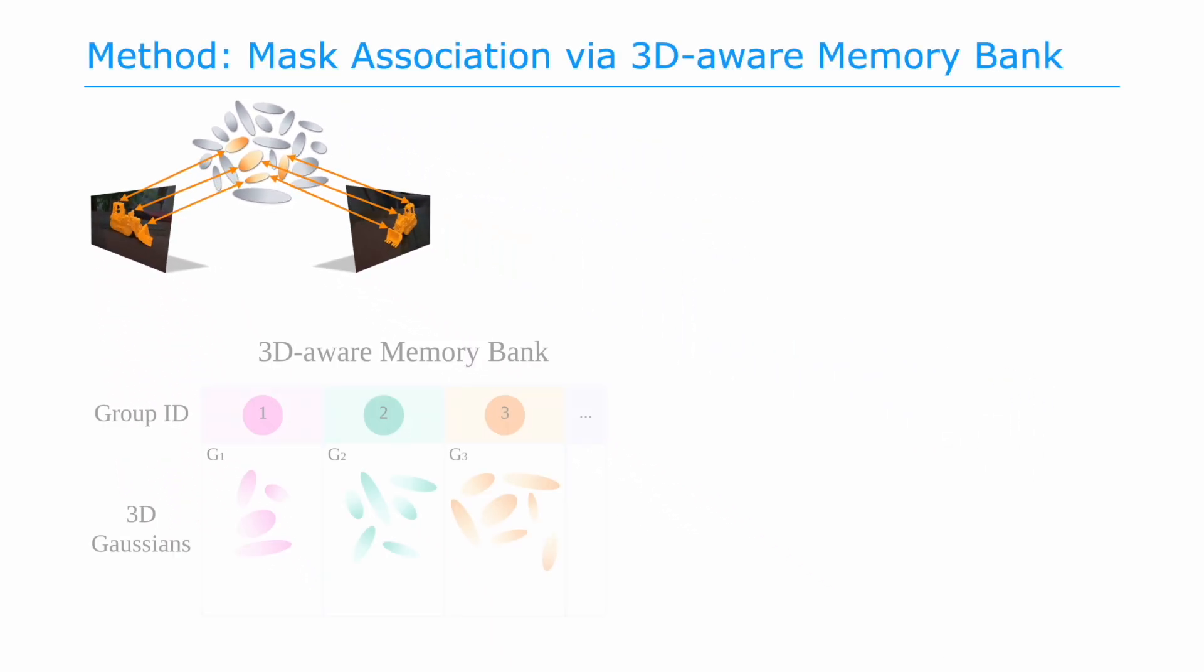Next, we introduce a 3D-Aware memory bank to collect and categorize 3D Gaussians into groups and use them to associate masks across different views. Specifically, when encountering a new mask, we first identify its corresponding Gaussians.